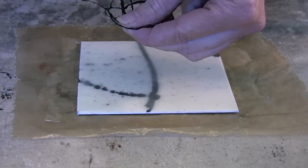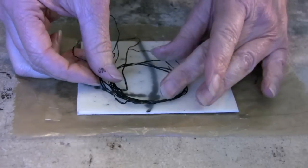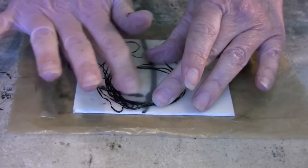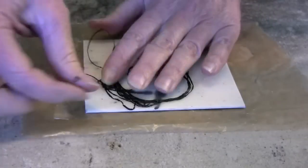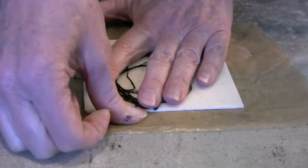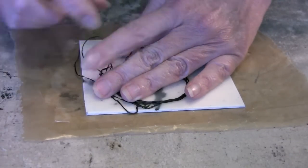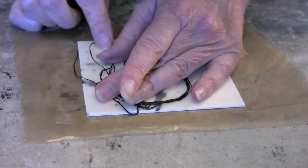Well, here we are back again for another encaustic technique for you to try. It's incorporating dental floss to help you create some textures, shapes, and different designs in your encaustic paintings.